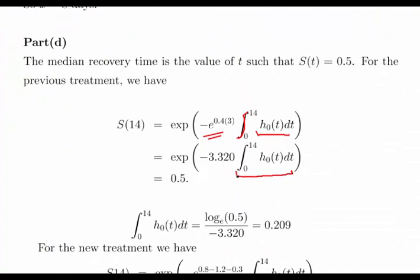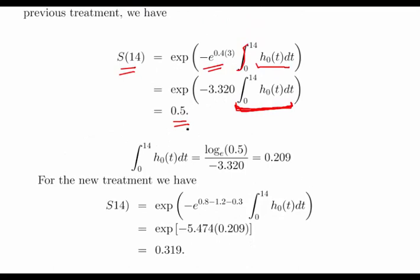We need to isolate and find a value for the definite integral, because we'll need that for the new treatment calculation. We know the survival function S(14) equals 0.5, which is the median. So the exponent of minus e to the power 1.2 — that is minus 3.320 — times this definite integral equals 0.5. Working it out, the definite integral equals 0.209.